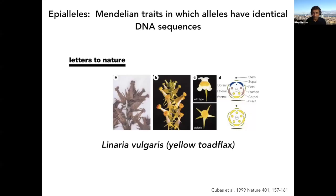Wood flax with bilateral symmetry, and below is another flower with radial symmetry. These are in fact the same species, but the lower panel shows a mutant with radial symmetry. The mutant has identical DNA sequence to wild type; the only difference is the expression of a gene which is silenced by DNA methylation.